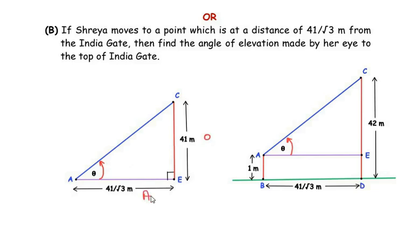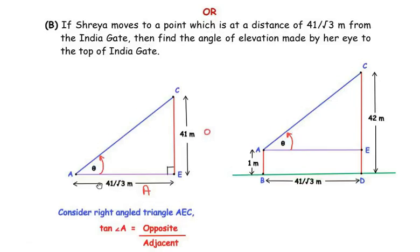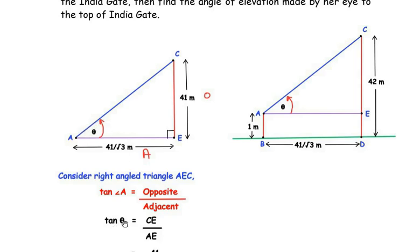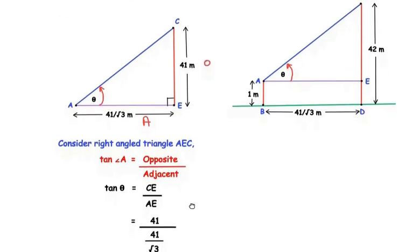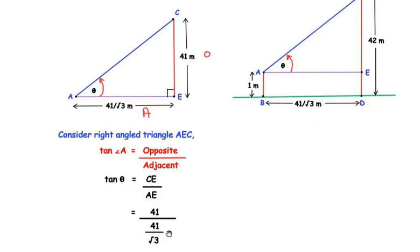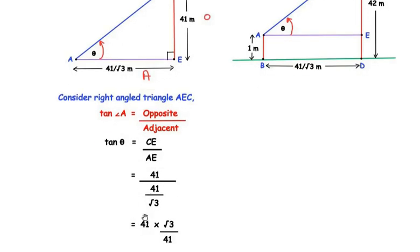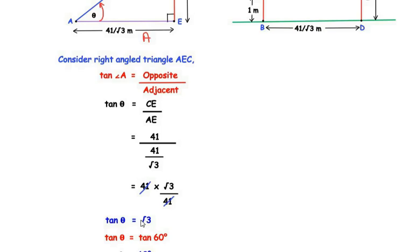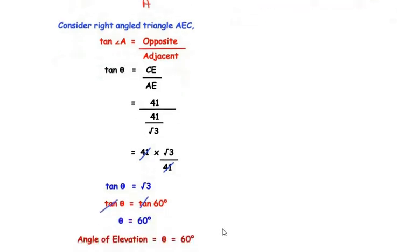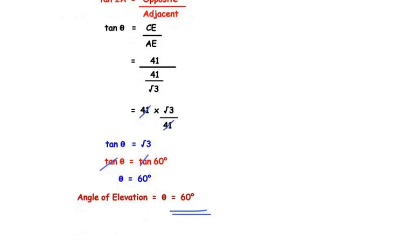Using the tan ratio in triangle AEC: tan θ = CE/AE = 41 ÷ (41/√3). Simplifying: dividing by a fraction means multiplying by its reciprocal, so 41 × (√3/41) = √3. Therefore tan θ = √3. We know that tan 60° = √3, so tan θ = tan 60°, giving us the angle of elevation theta equal to 60 degrees.